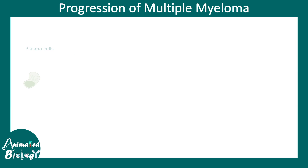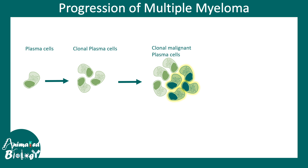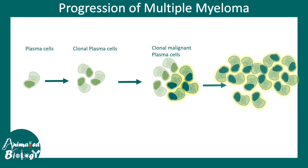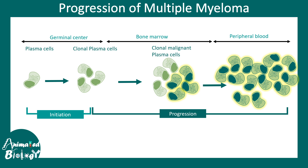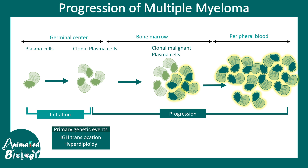In multiple myeloma, things start with the plasma cell. Plasma cells can clonally expand — too many plasma cells is not yet cancerous, but when one clonal plasma cell expands excessively, that is a clonal malignant transformation. This eventually gives rise to myeloma. The initiation and progression phases can be separate, starting in the germinal center, then plasma cells infiltrate the bone marrow, and eventually are found in the blood as well. There are different progression stages.